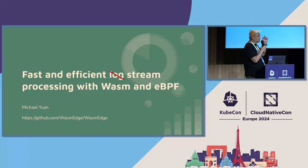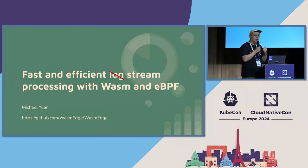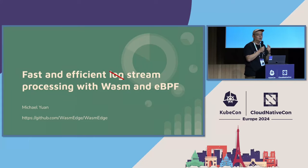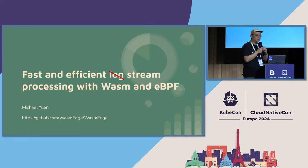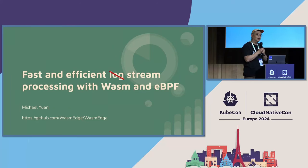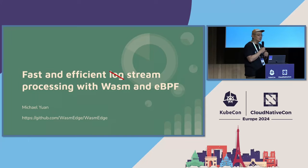As you can see from the title, there are two seemingly unrelated technologies being mentioned in the same sentence: Wasm and eBPF. Most people would say they know both are lightweight virtual machine formats, but they're hardly related. We're going to dive into that, and we're going to go even further — towards the end of this talk, we'll also talk about AI and machine learning, which seems to be the topic of this conference. How does that relate to Wasm, eBPF, and stream processing?